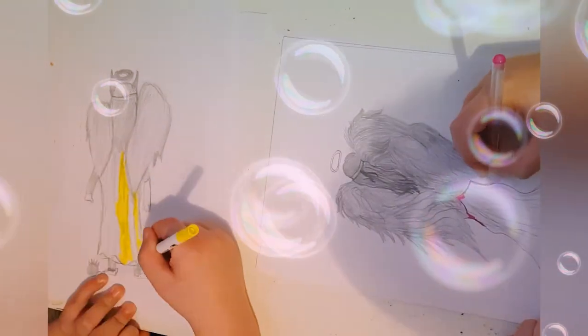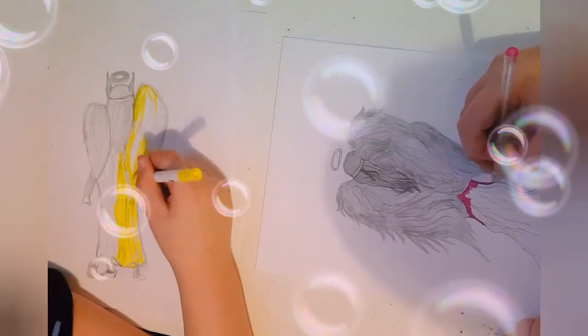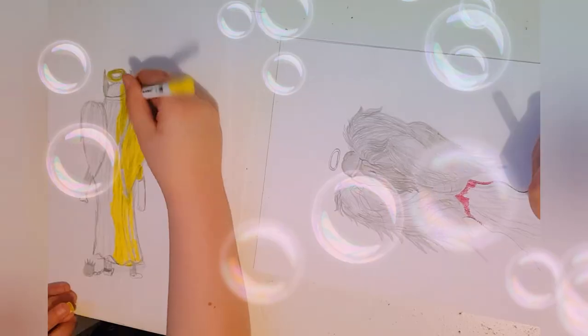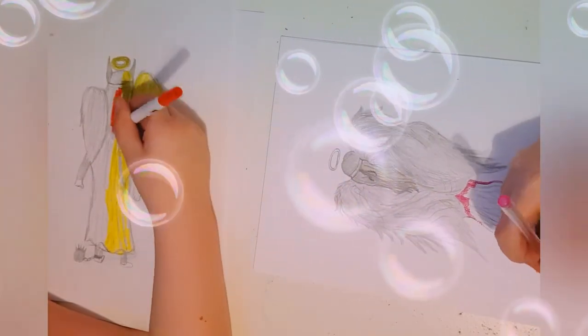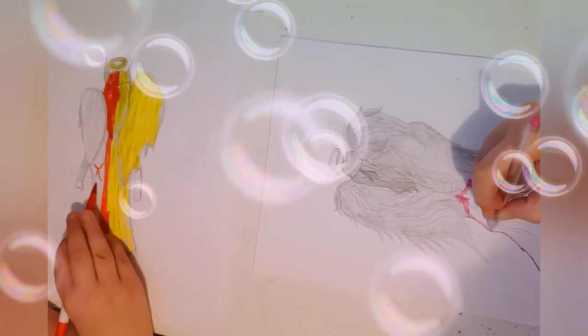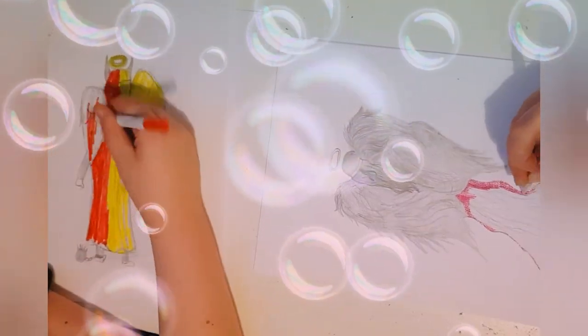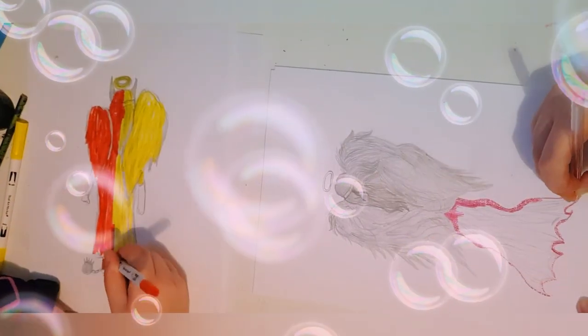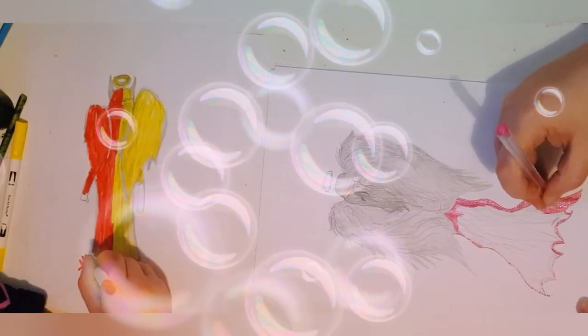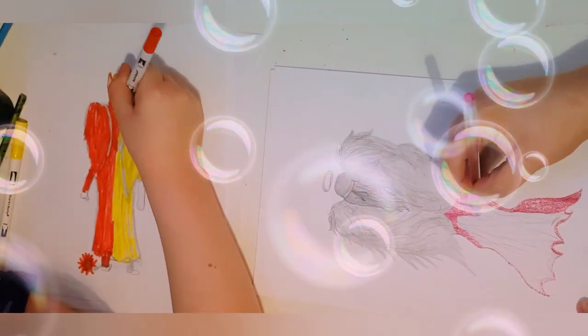I think half of it should be yellow and half should be red, demon angel. I think I'm gonna do some of it on one half hell and one half heaven. Why does my red look like an orange?